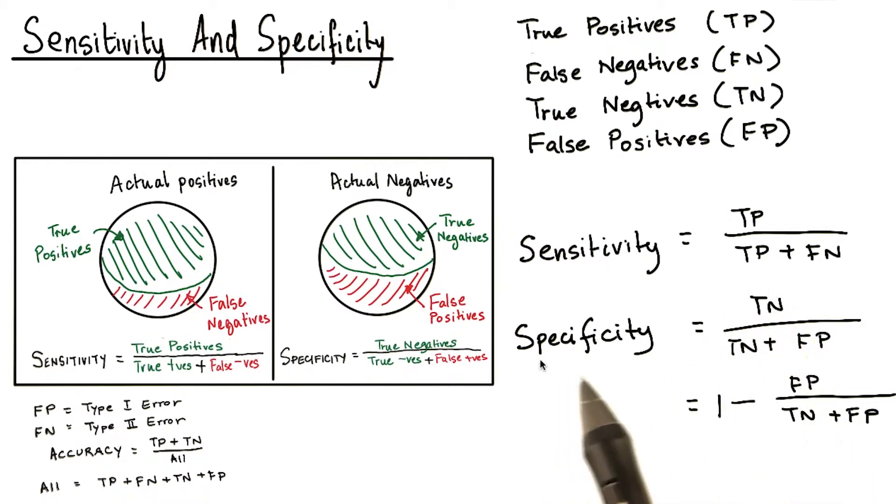With this notation, we can write the sensitivity and specificity like this. Sometimes you will see the specificity written as 1 minus the false positive over the sum of true negative and the false positive.